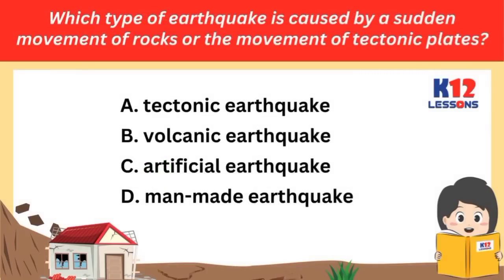Which type of earthquake is caused by a sudden movement of rocks or the movement of tectonic plates? A. Tectonic earthquake. B. Volcanic earthquake. C. Artificial earthquake. D. Man-made earthquake.